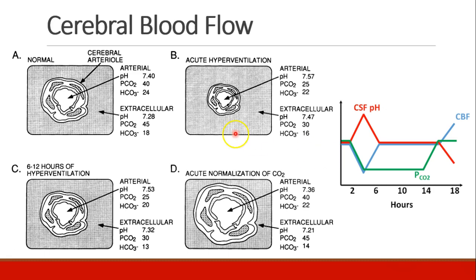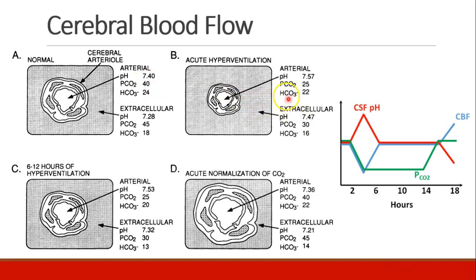We have some diagrams to demonstrate that. Here we see a cerebral blood vessel. The pH is 7.4, and the extracellular pH is 7.28 — this is normal. Now we create hyperventilation, which creates alkalosis. The pH is 7.57 here; the pCO2 is 25, down from 40. As a result, the tissue supplied by this artery also becomes more alkalotic, and the pCO2 goes down here.